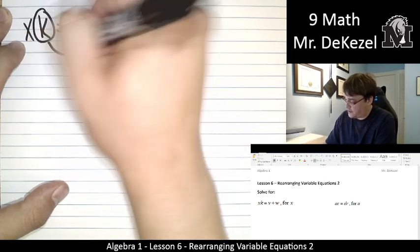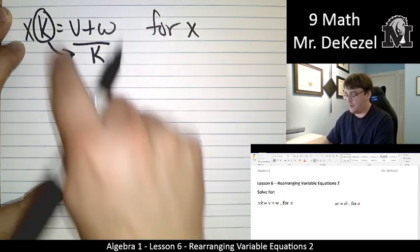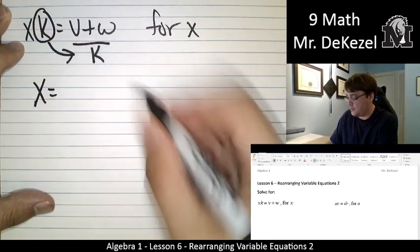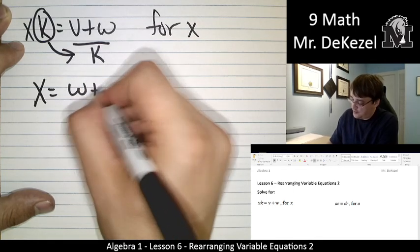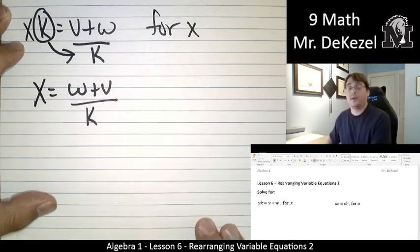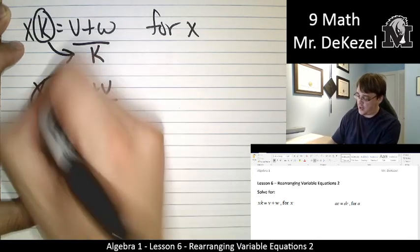We're going to take k and we're going to move it down to the bottom on the other side. Multiplied by x means it's divided on the other side. So x is equal to w plus v divided by k, and that is our answer.